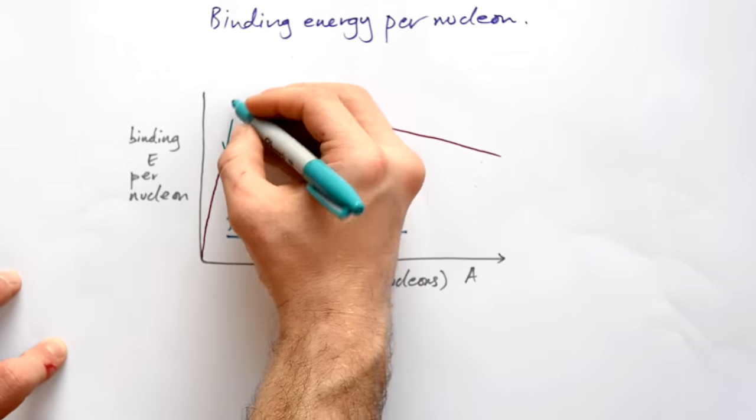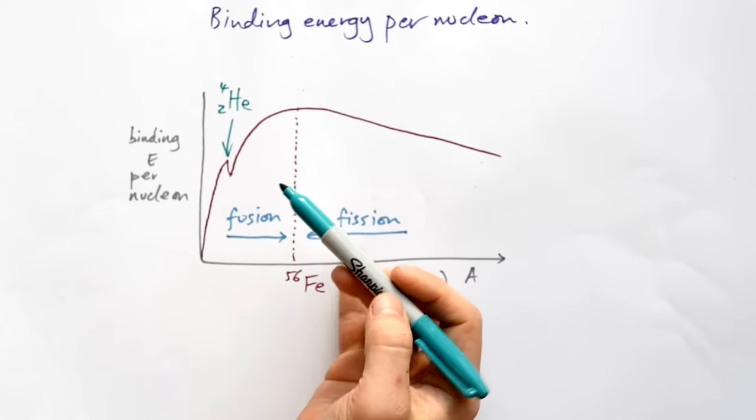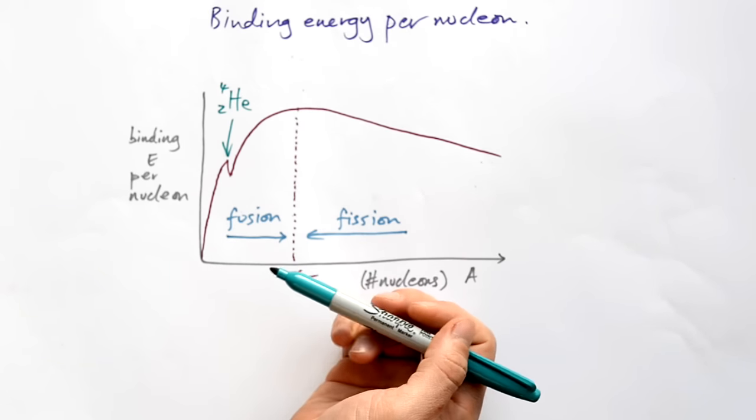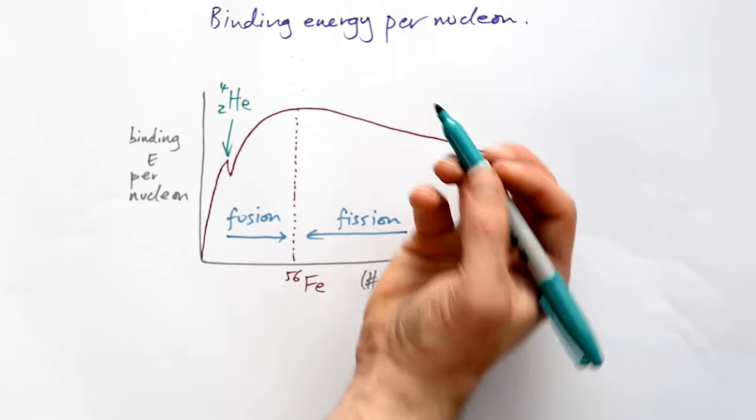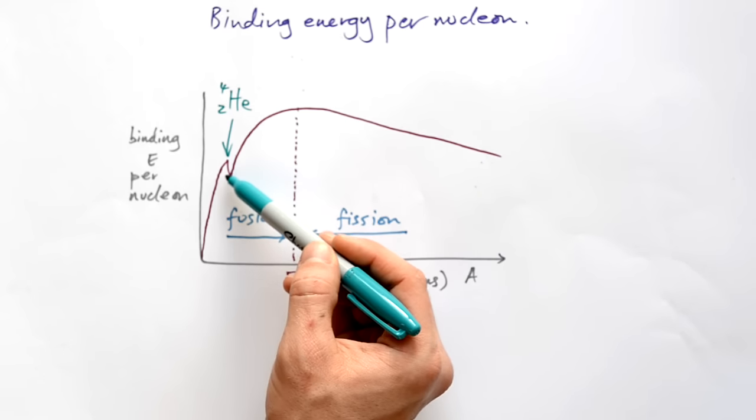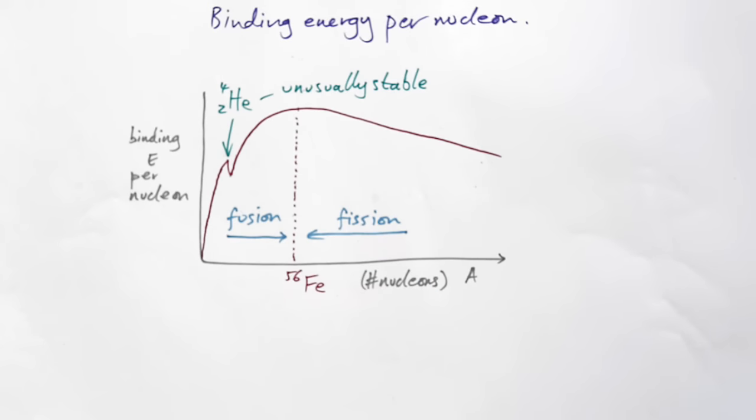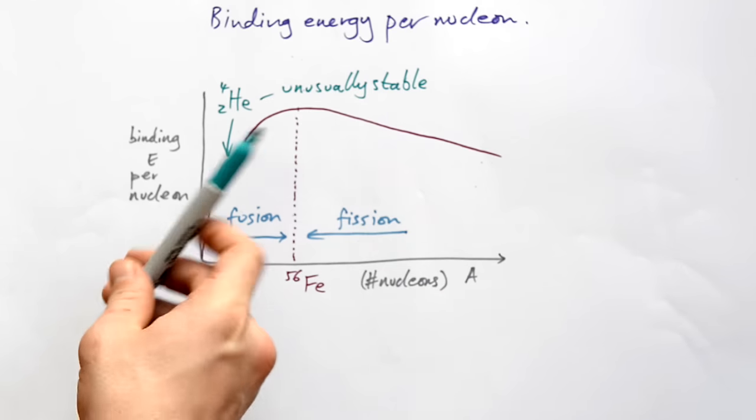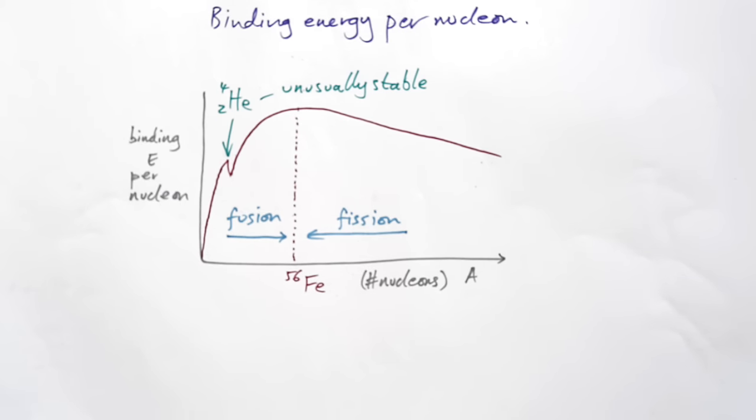Now what's this bump up here? This is helium. Now helium has an uncharacteristically high binding energy per nucleon. So that means that it's unusually stable compared to its immediate neighbors. So that kind of explains why when we have unstable nuclei, quite often they emit alpha radiation. They emit a helium nucleus because that's a very stable thing with a high binding energy to give out.